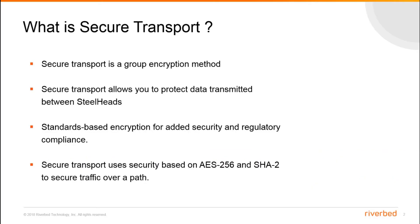So what is secure transport? Secure transport is a group encryption method for path selection deployments in RiOS. It allows you to protect data transmitted between steelheads over private, public, and hybrid network links with standards-based encryption for added security and regulatory compliance. Secure transport uses security based on AES-256 and SHA-2 to secure traffic over path.